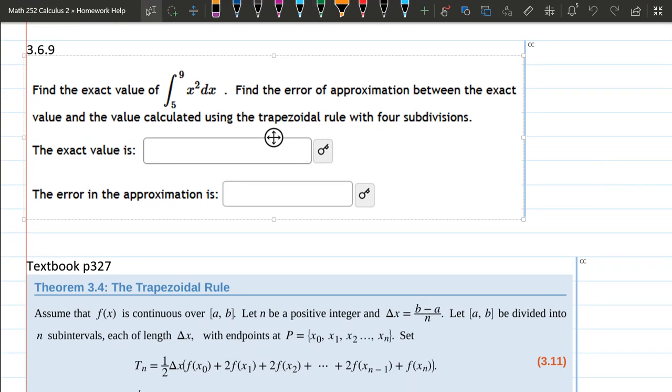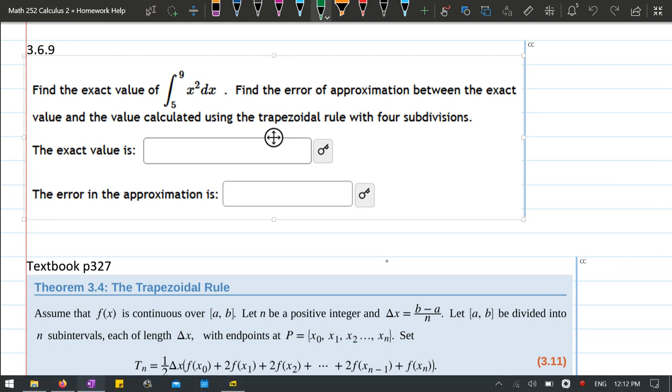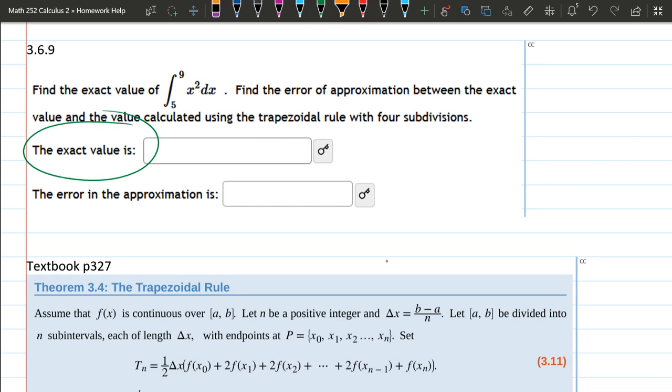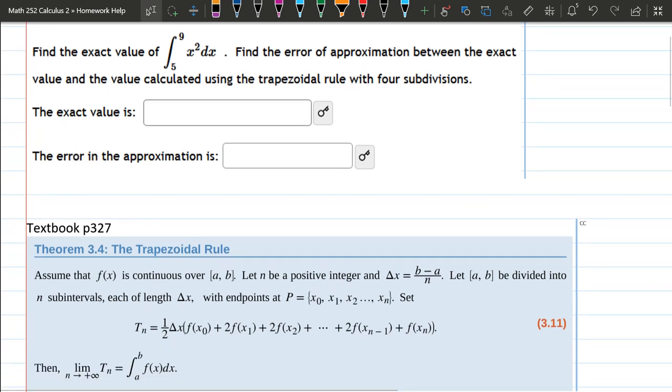We're going to use the trapezoidal rule to compute the approximate value. I'm not going to compute the exact value here. We did that earlier. I'm just going to compute the approximate value. And then the difference of these two, the difference of the exact and the approximate value we're going to compute, is going to be the error. It's going to be the absolute value of that. So make sure if you subtract it in one order and you get negative, it's just going to be the positive difference.